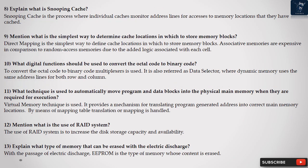Question 9: Mention what is the simplest way to determine cache locations in which to store memory blocks? Direct mapping is the simplest way to define cache locations in which to store memory blocks. Associative memories are expensive in comparison to random access memories due to the added logic associated with each cell.